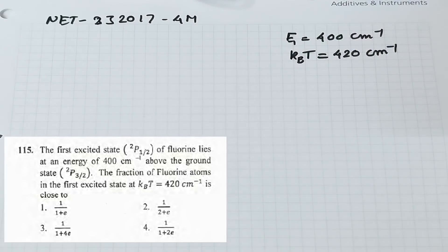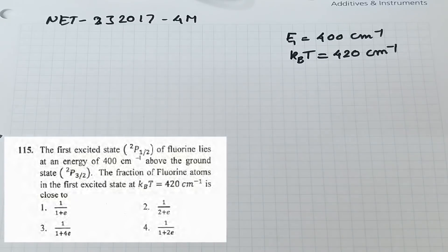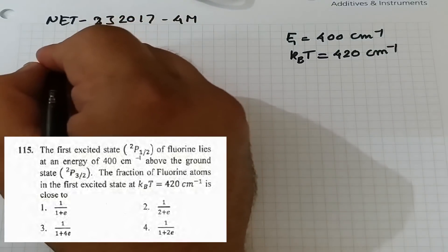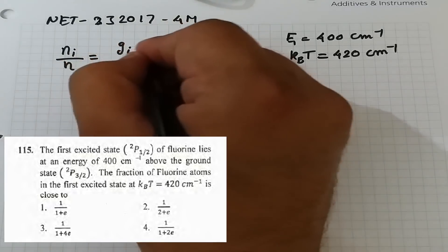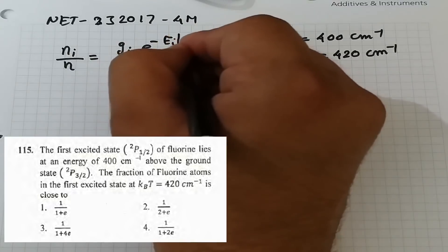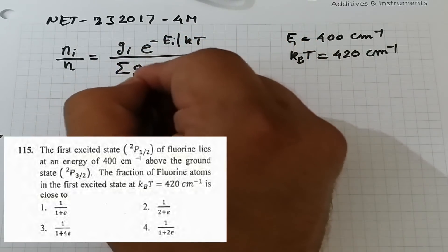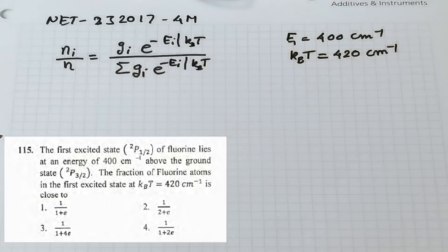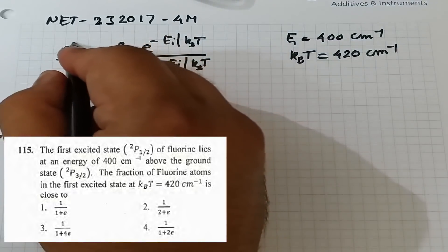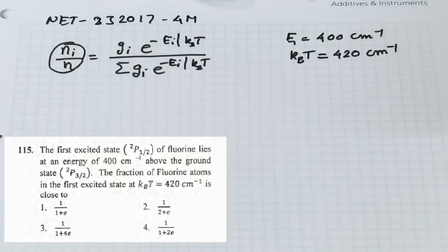Whenever we need to find the fraction of molecules in a state, we use the Maxwell-Boltzmann distribution law: nᵢ/n = gᵢ e^(−εᵢ/kT) / Σ gᵢ e^(−εᵢ/kT). Here nᵢ/n gives the fraction of molecules in state i, and gᵢ is the degeneracy.